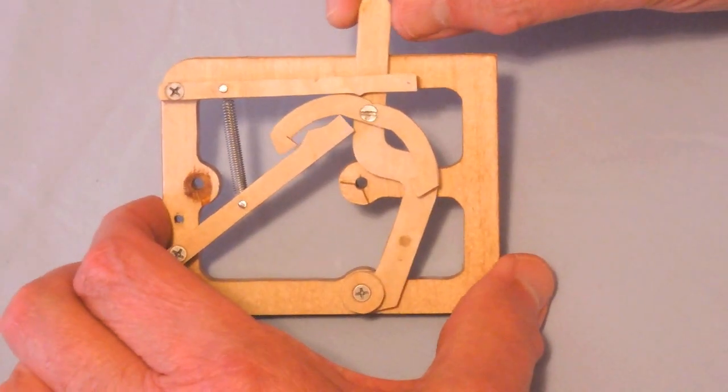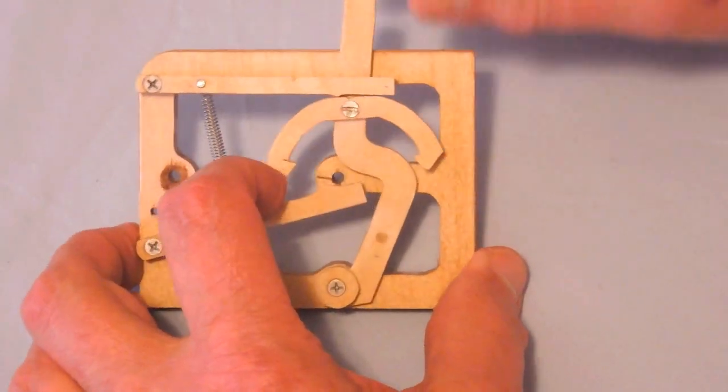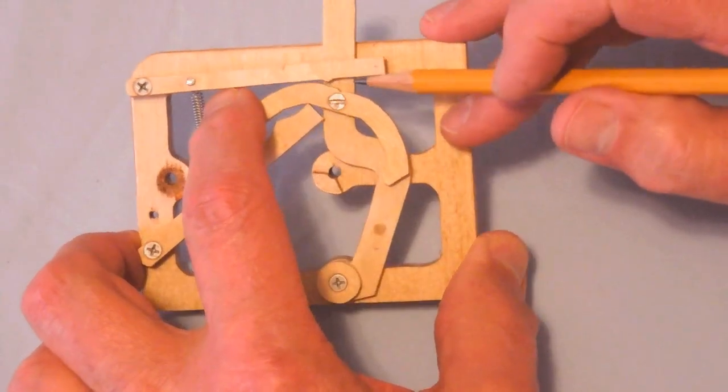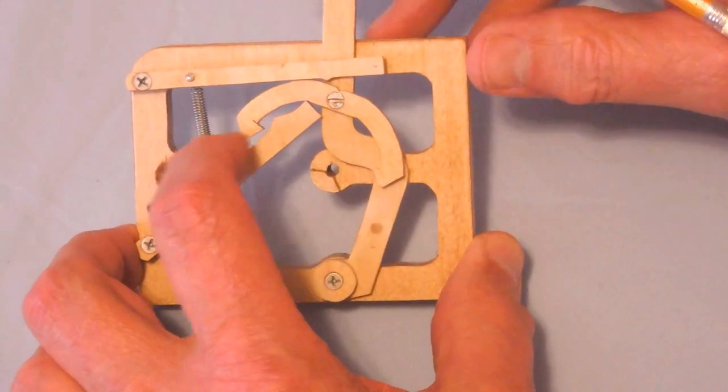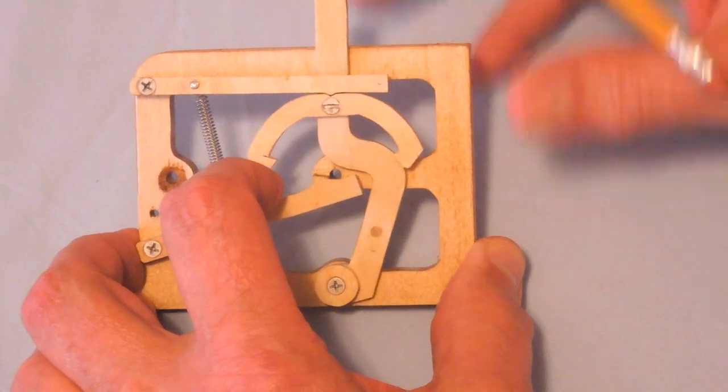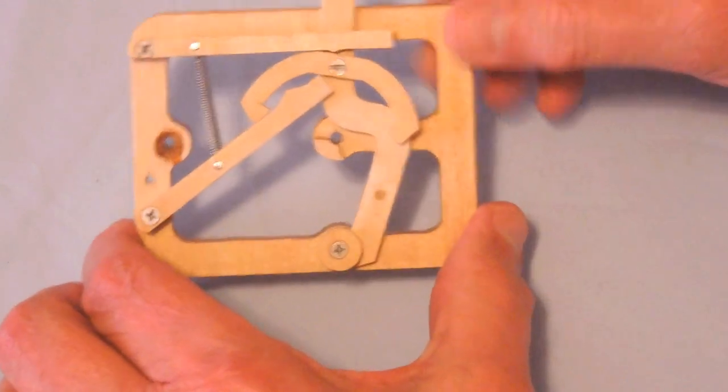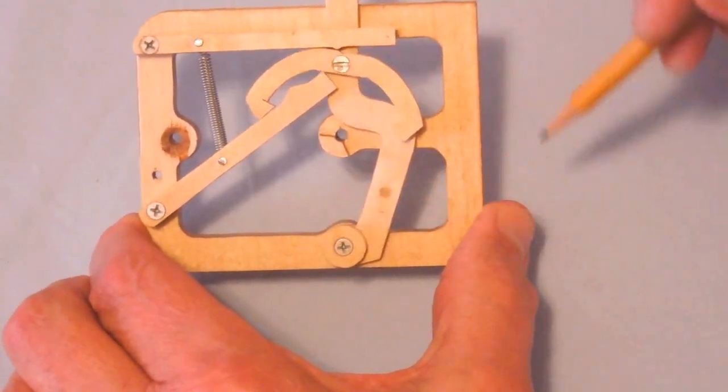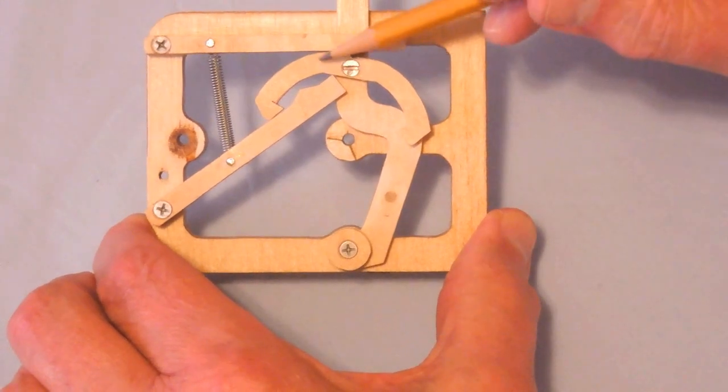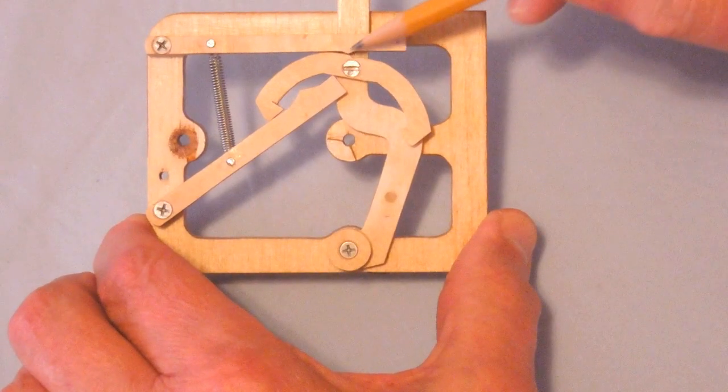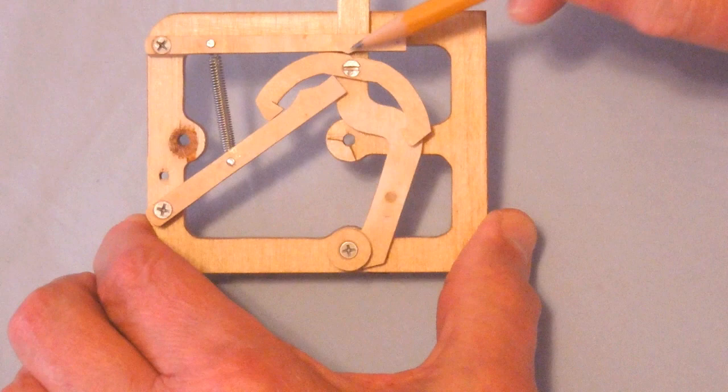When you reduce one of these mechanisms to half size, sometimes the details become quite small like this detent for the yoke. As it is, this works perfectly. If someone was going to try and make this smaller than half size, some sort of correction would have to be made here because this probably wouldn't work if it was any smaller.